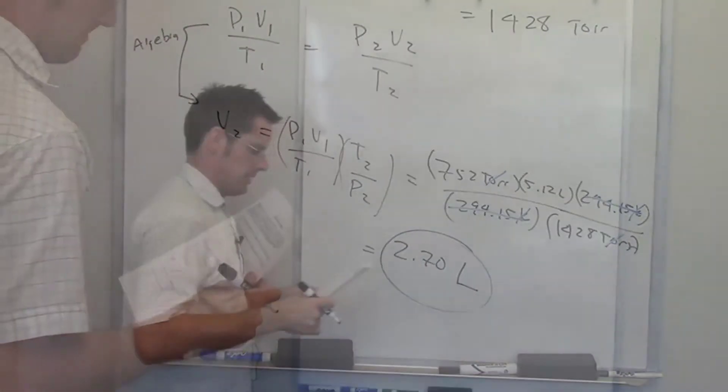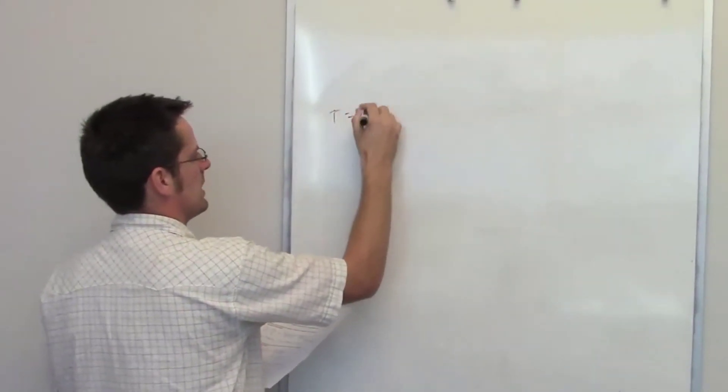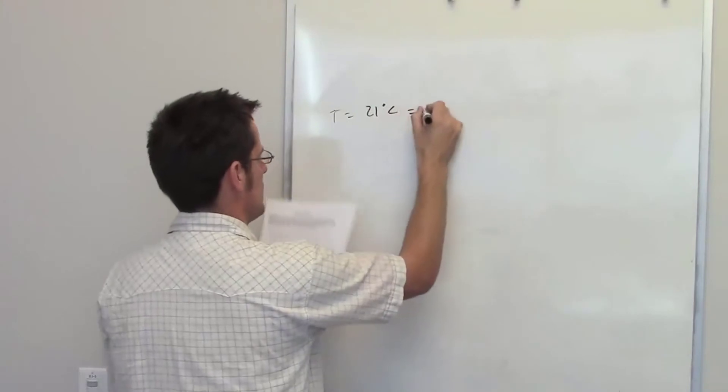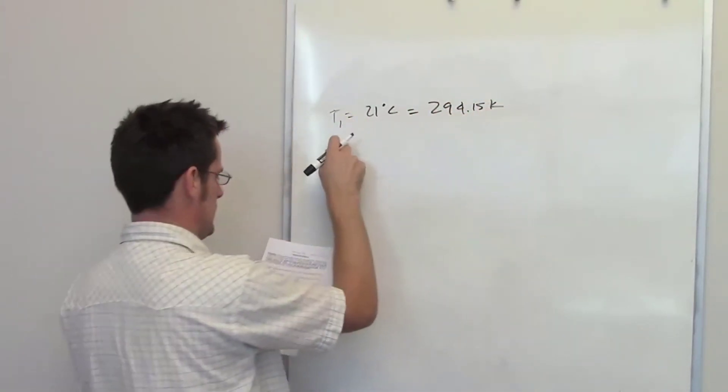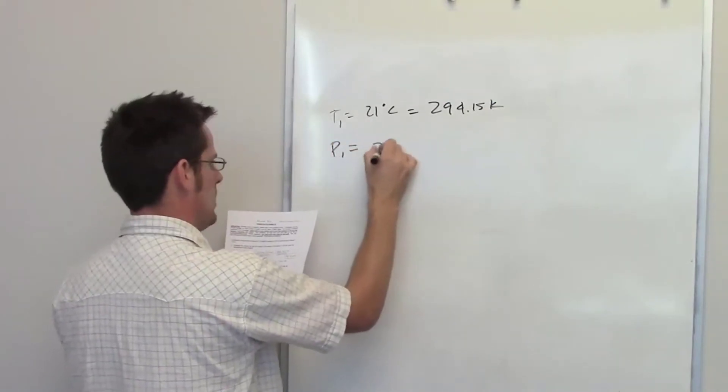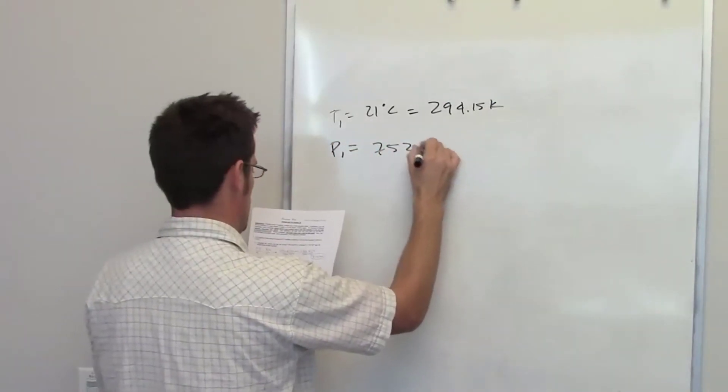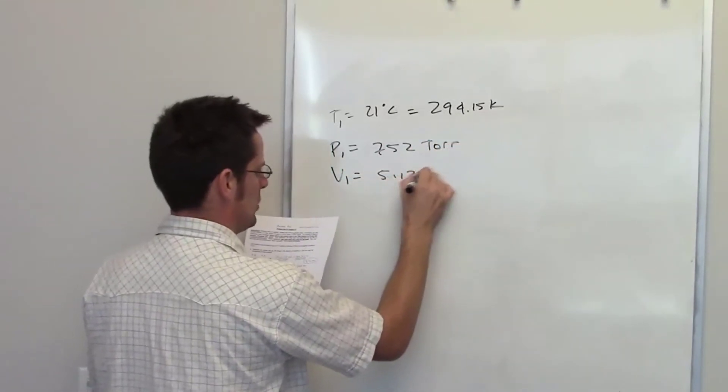In the second problem, I have the same gas whose temperature is sitting at 21 degrees Celsius, which we once again determined is 294.15 kelvins. So that's its initial temperature, or T1. It's sitting at a pressure, or P1, initial pressure, of 752 torr. And its initial volume, V1, is equal to 5.12 liters.